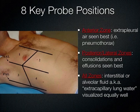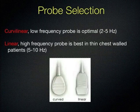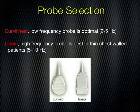Briefly, on probe selection: ideally we use the curvilinear probe, but it depends on your patient's body habitus. You can also use the high-frequency linear probe or the cardiac probe. If you're looking for the big picture, start with the low-frequency probe for a deeper view. When looking for detail — like with pneumothorax — pick up the high-frequency probe for more detail.